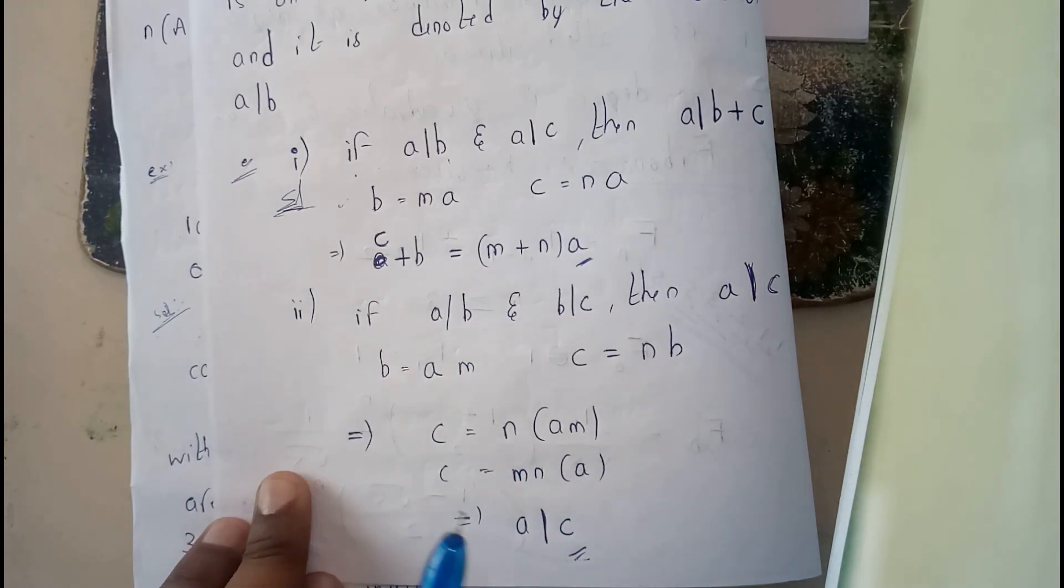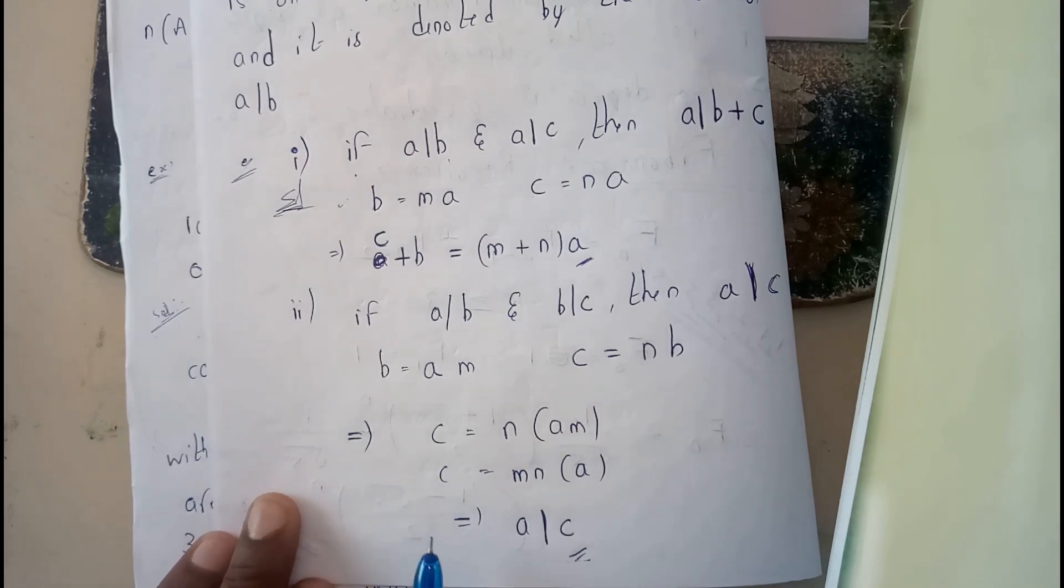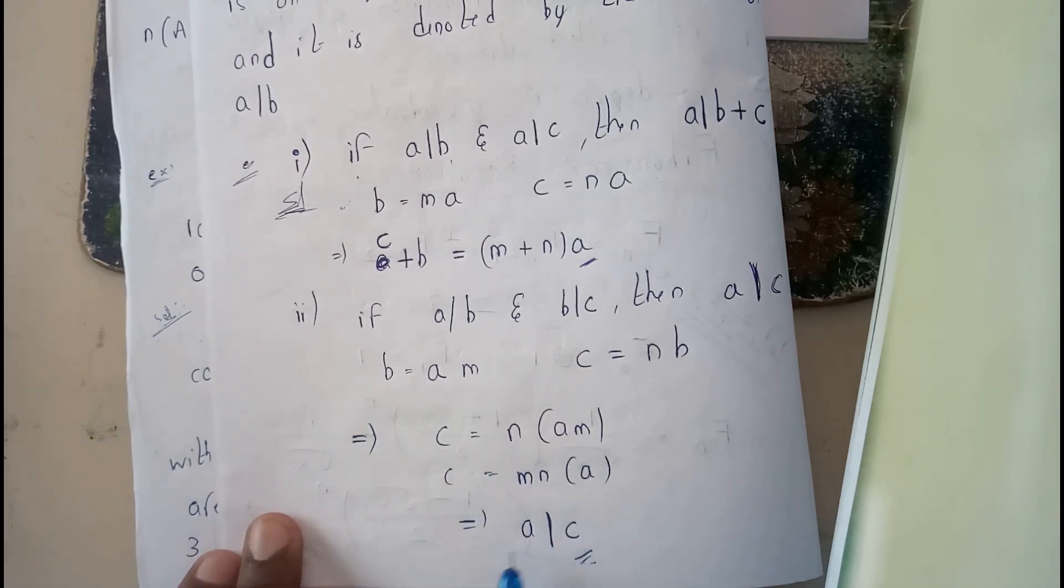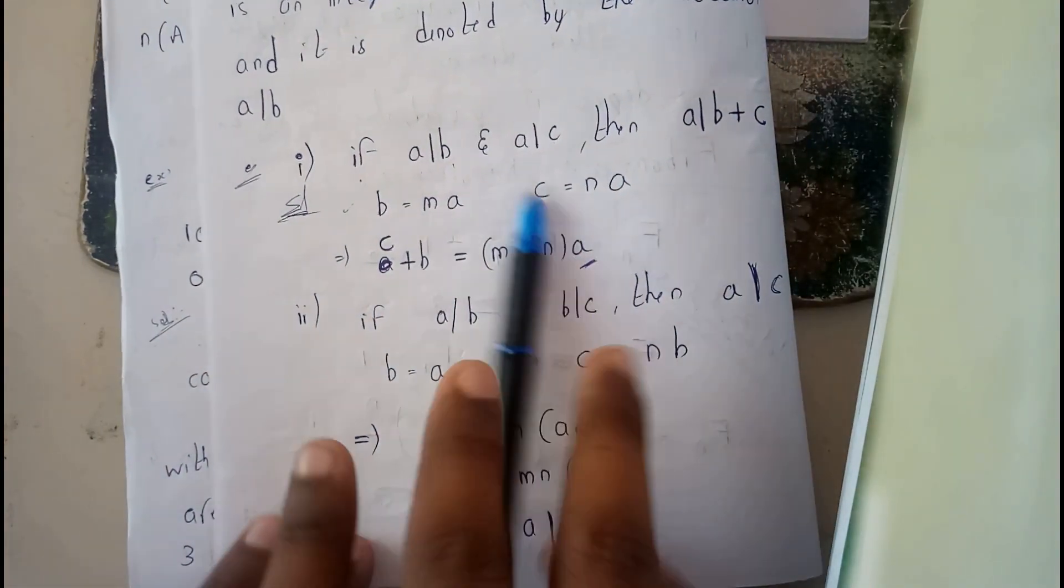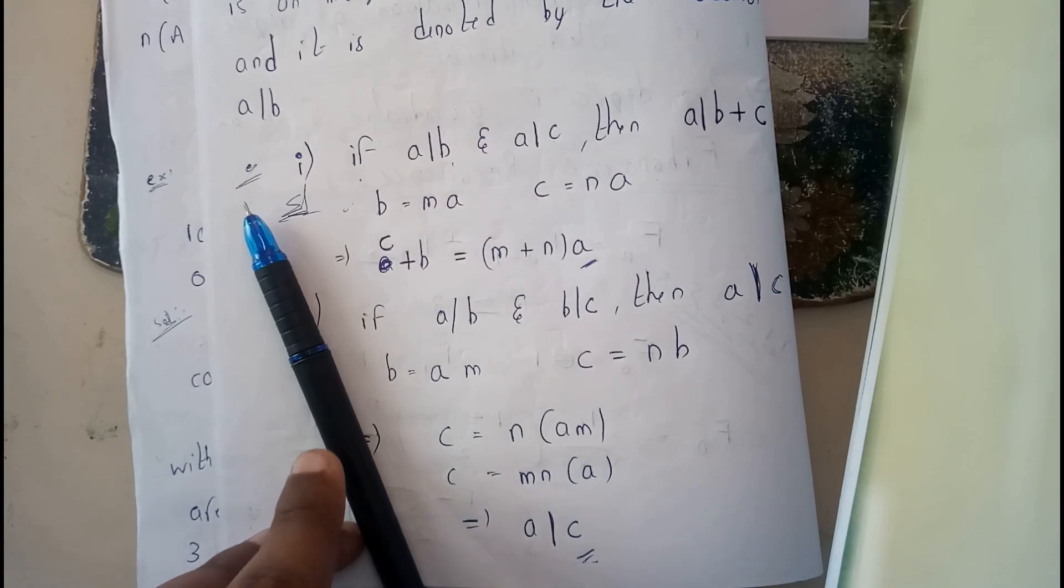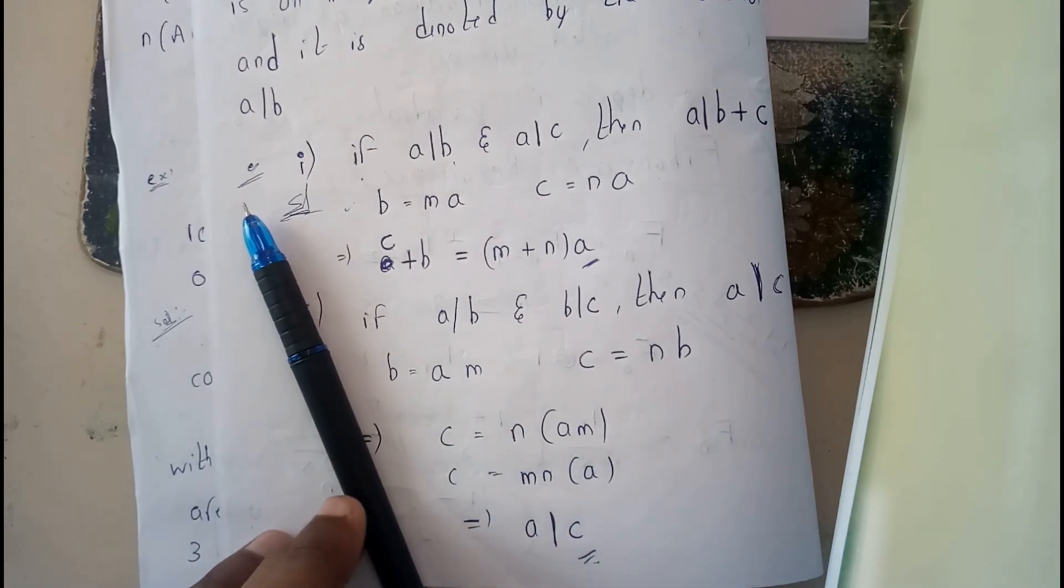This is what the division algorithm is all about. The basic equation of division algorithm is: dividend equals divisor times quotient plus remainder. That's the main equation guys. I hope you understood all about the division algorithm. In the next video we will be discussing prime number algorithms. Thank you guys, thanks for watching.